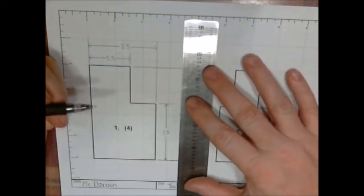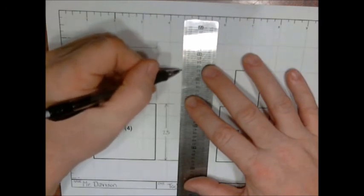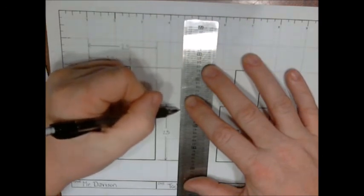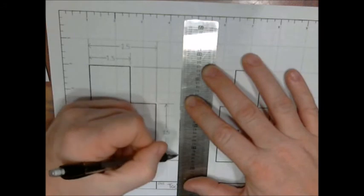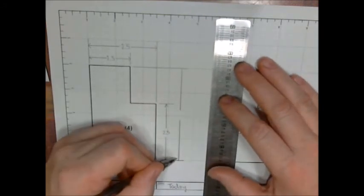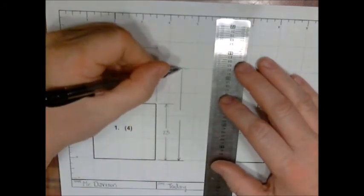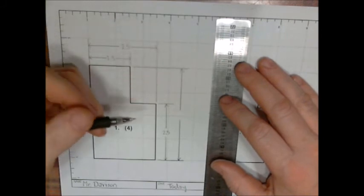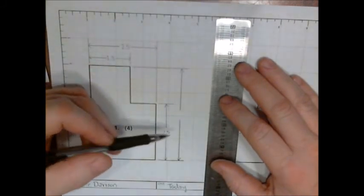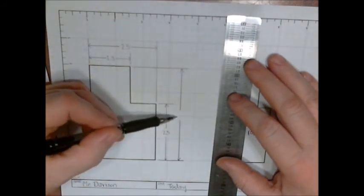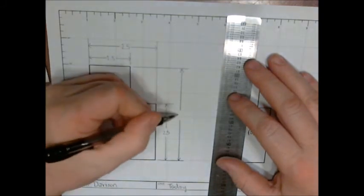Then out here I am going to do my overall height of this object. Count up the inches - one, two, three, four total inches.